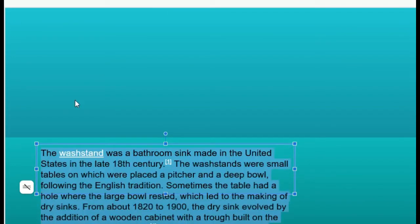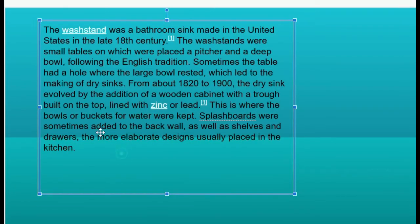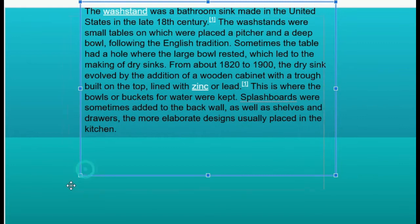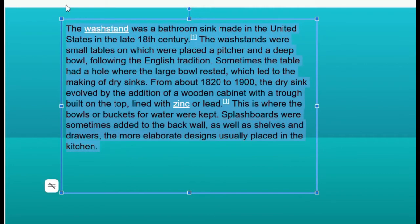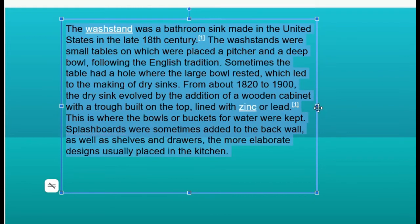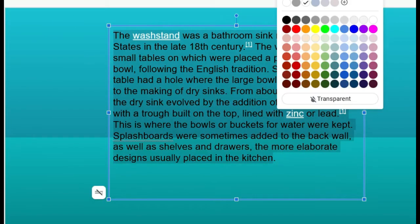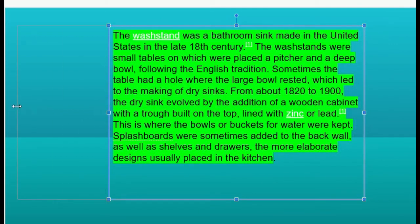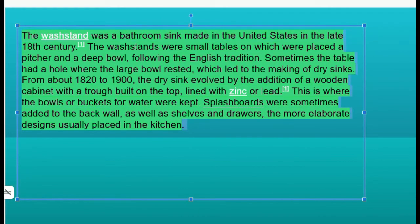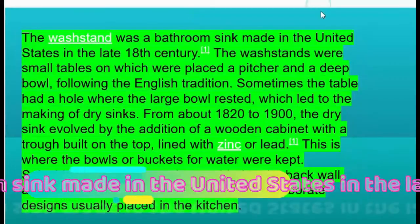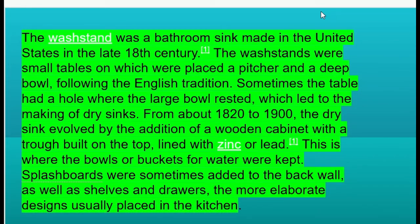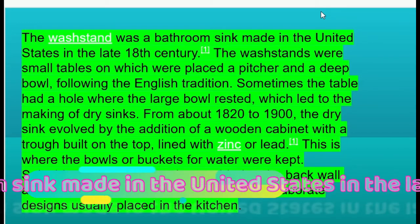The wash stand is a bathroom sink made in the United States in the late 19th century. The wash stand was a small table on which were placed a pitcher and a deep bowl, following English tradition. Sometimes the table had a hole where the large bowl rested.